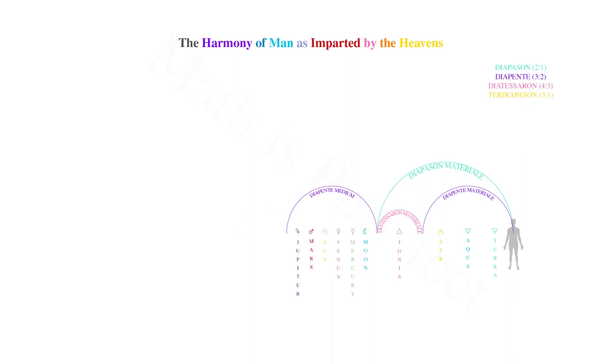The middle fifth, or diapente medium, traverses the spheres of the Moon, Mercury, Venus, Mars, and Jupiter, whereas the middle fourth, or the diatessaron medium, contains the sphere of Saturn, the stars, and the primum mobile, or the cosmos itself. This marks the bridge from the spiritual to the material, or the middle octave of man.